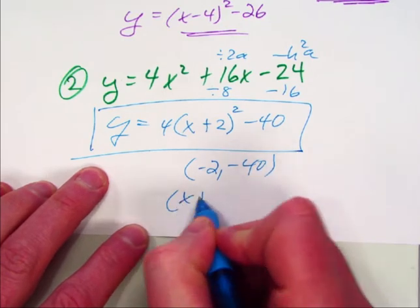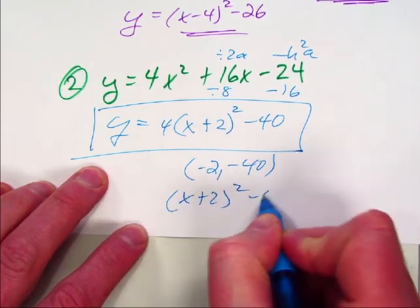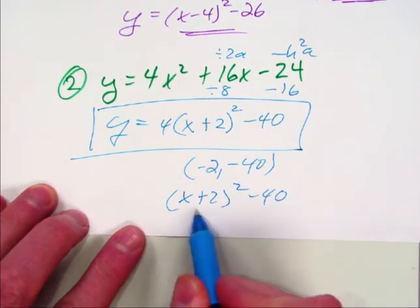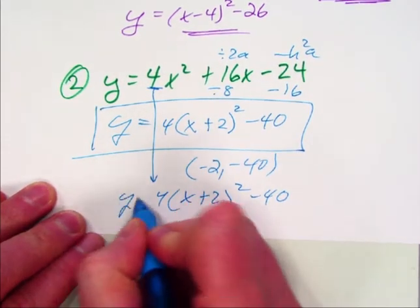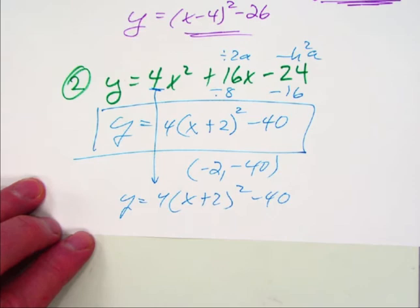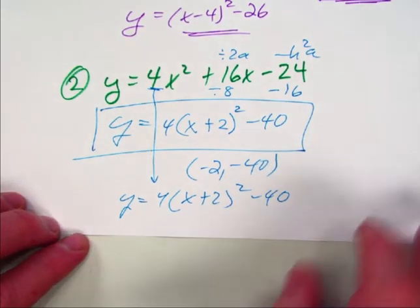But the only difference is, remember you change this one, you subtract this one out, you're like, well what do I do for the a value? You just take the a value. You just steal it and put it out front, and then you have it. So y equals 4 times x plus 2 squared minus 40. So you should know how to do those two.